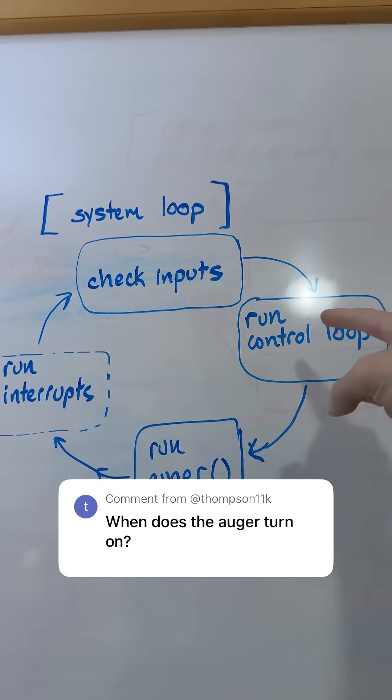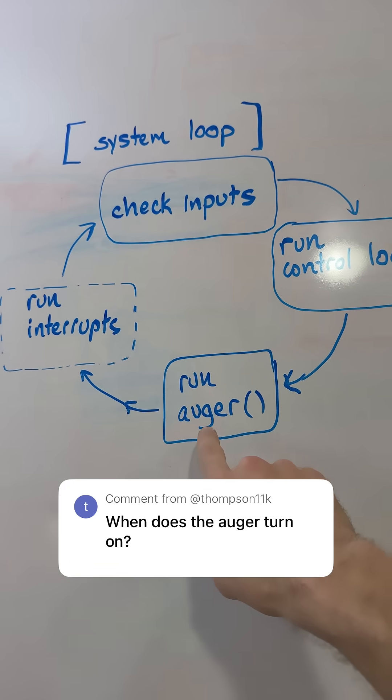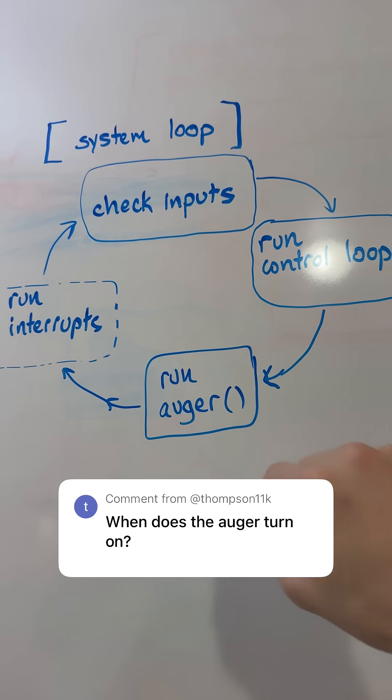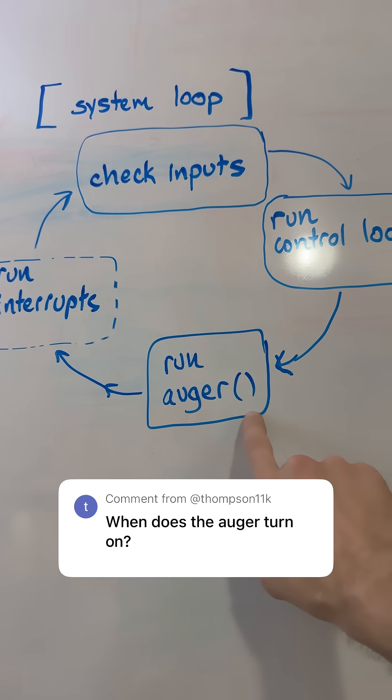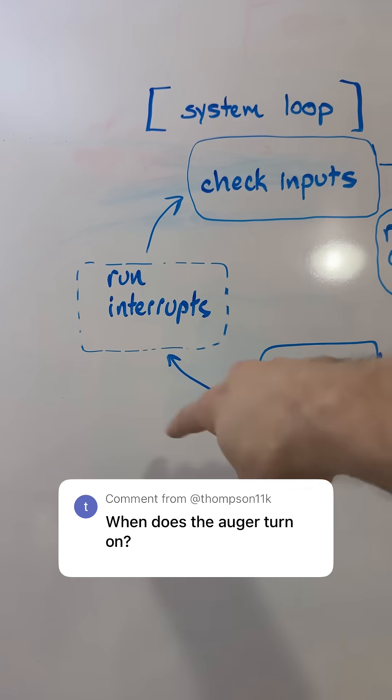The control loop is happening here in a cycle. After the control loop goes, then we run the auger based on a function that decides, based on the flag, to go ahead or stop. Then we continue the loop.